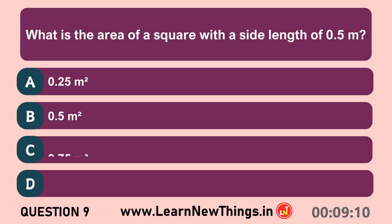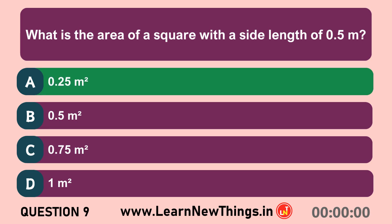What is the area of a square with a side length of 0.5 m? 0.25 m².